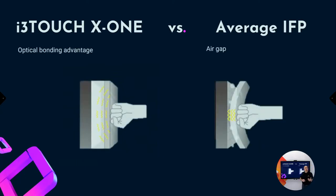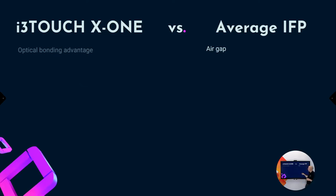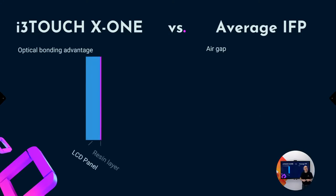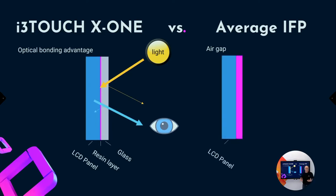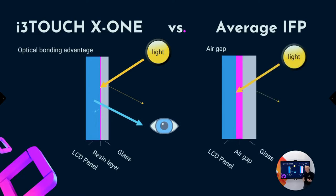Another advantage of optical bonding is that because the glass is bonded to the LCD, the glass cannot bend and consequently it can't break. And the last advantage of optical bonding is visibility. Because the glass is thinner and there is no air in between, there will be very limited reflection of light, and the quality of the image will not be reduced by air or thicker glass. That's the case with the average IFP, where because of the air and the thicker glass there will be more reflection and the image quality will be reduced because of the air gap and the glass.